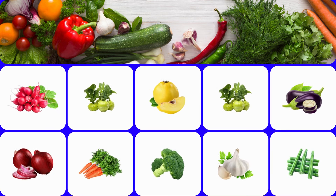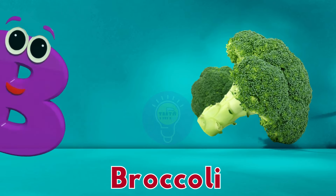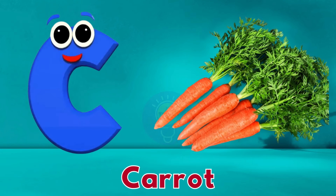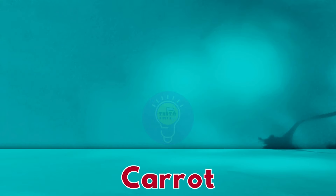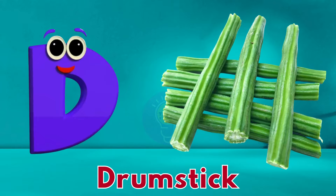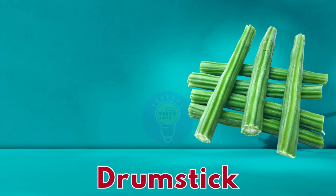A is for apple gourd, apple gourd. B is for broccoli, broccoli. C is for carrot, carrot. D is for drumstick, drumstick.